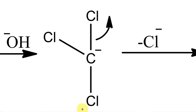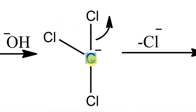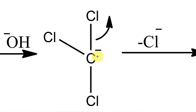Carbon gains an extra electron, so carbon will have a negative charge — that is the carbanion. This carbanion is somewhat stabilized because of the electron-withdrawing chlorine atoms; three chlorine atoms are attached to this carbon, so this carbanion is a little bit stabilized. That is why it forms with a simple base like OH⁻.